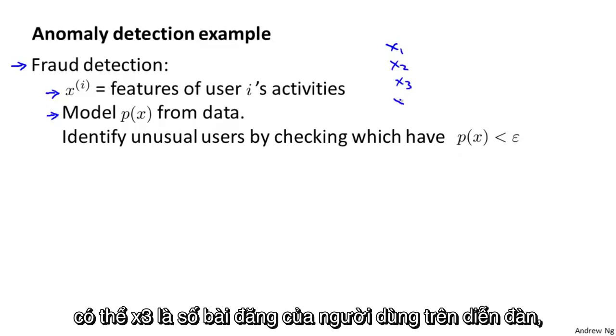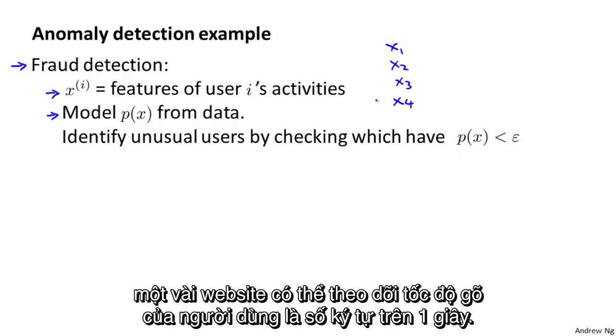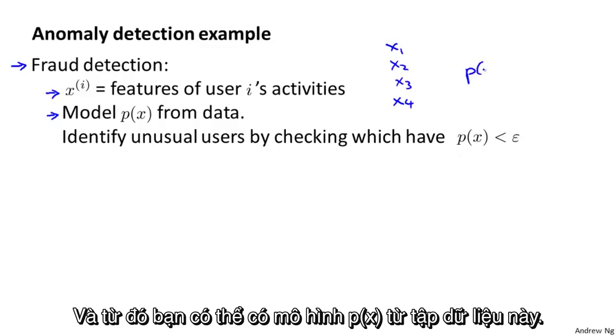X2 may be the number of webpages visited or the number of transactions. Maybe X3 is the number of posts of the users on the forum. A feature X4 could be what is the typing speed of the user? And some websites can actually track that. So what's the typing speed of this user in characters per second? And so you can model P of X based on this sort of data.